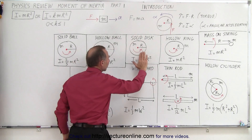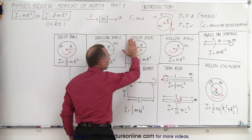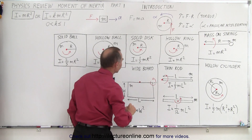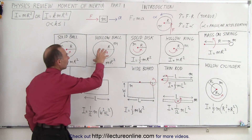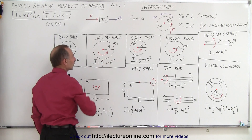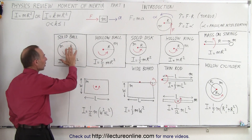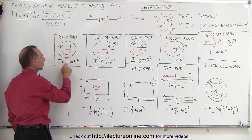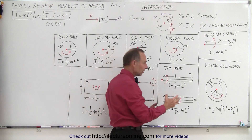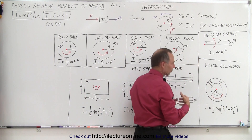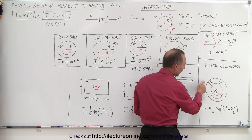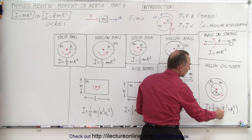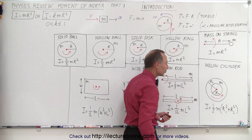But if the mass is distributed throughout the disk — a uniformly distributed solid disk — then the moment of inertia is one-half mr squared. If it's a hollow ball, then the moment of inertia is two-thirds mr squared. If it's a solid ball with all the mass distributed uniformly throughout, then the moment of inertia is two-fifths mr squared. If we have a hollow cylinder with an outer radius and an inner radius, the moment of inertia is one-half m times the outer radius squared plus the inner radius squared.